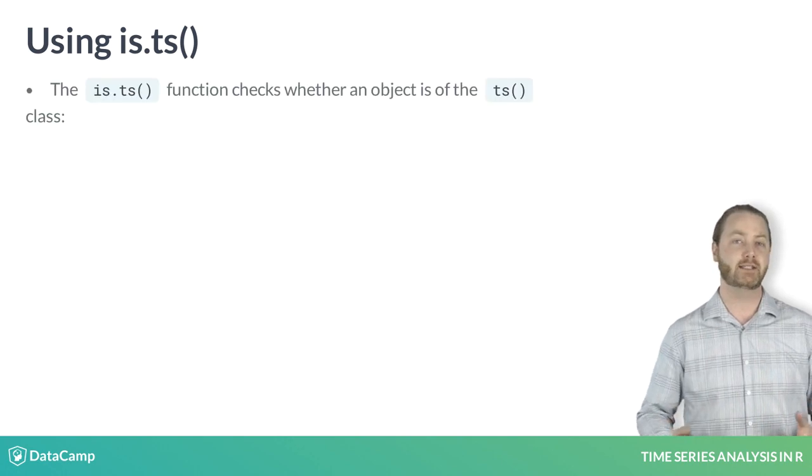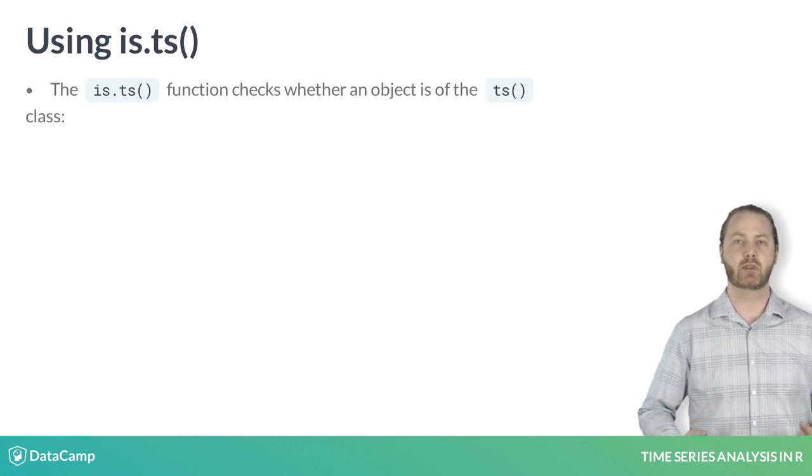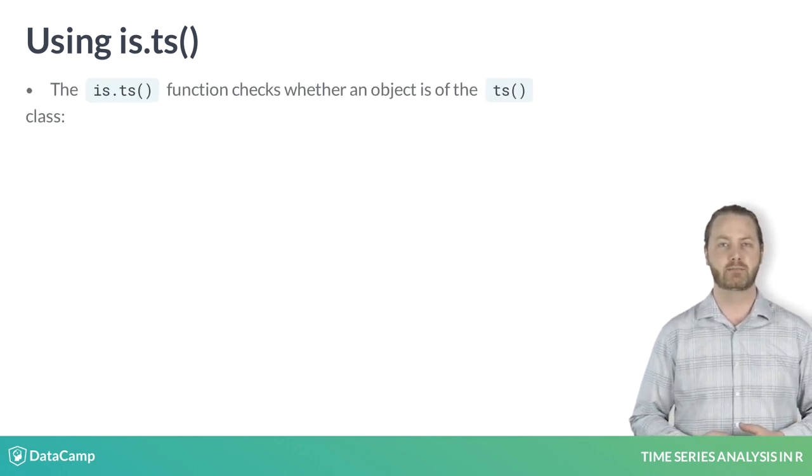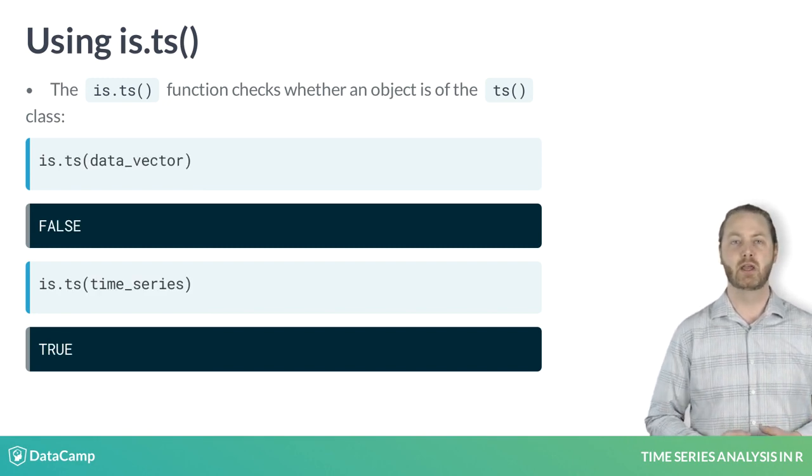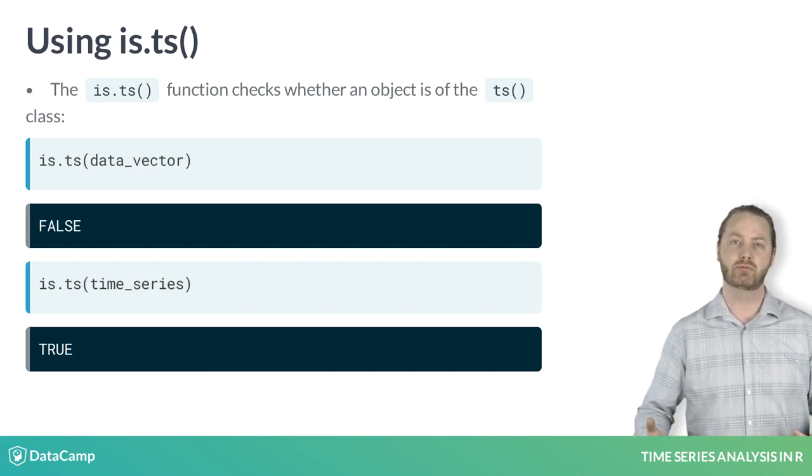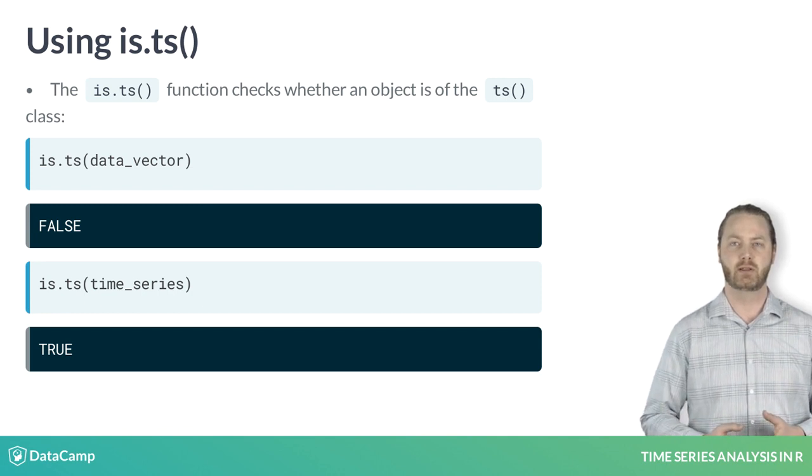You can use the function is.ts to check whether a given object is a time series. As you can see, it reports false for the data vector and true for the time series that were just created.